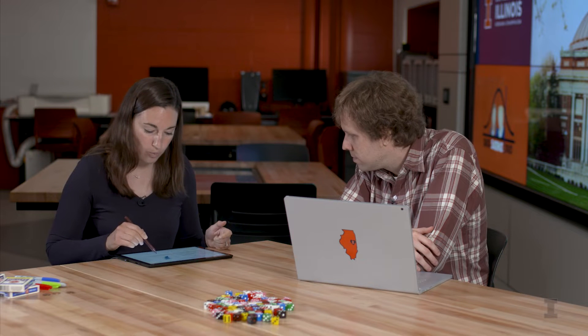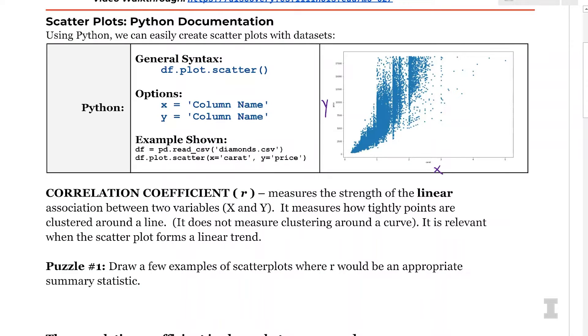And we may be interested, just looking at the carat weight and the price, what is the relationship between these two variables? And we can see that the points again kind of slope up and to the right, meaning it has a positive correlation. And the way that we can measure this is through a statistic called the correlation coefficient.